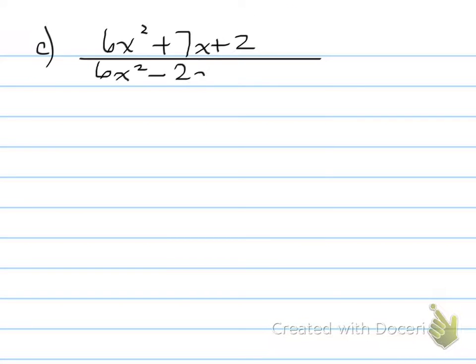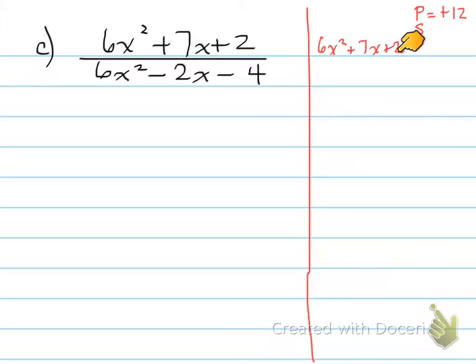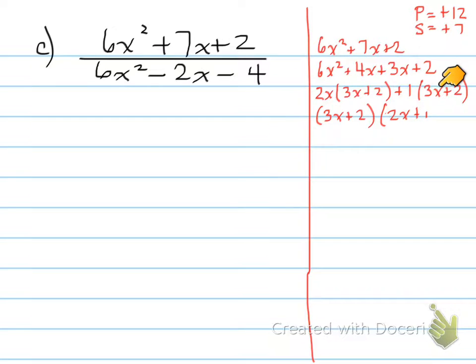6x² + 7x + 2 over 6x² - 2x - 4. Again, let's show a decomposition to be able to factor these. So 6x² + 7x + 2. We need a product of 12, that is the first and the last, and a sum of the middle, which is 7. What two numbers multiply to give us 12 and add to give us 7? Well, that's 3 and 4. So we're going to have 6x² + 3x + 4x, or +4x + 3x, + 2. From that, we common factor out a 2x from the first two. And from the second part, I'm just going to common factor a +1 times (3x+2). Now, you'll notice there's (3x+2) in both cases. So (3x+2)(2x+1). And that's the final factors for the numerator.